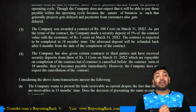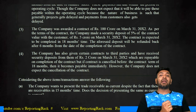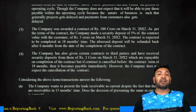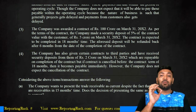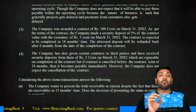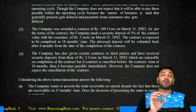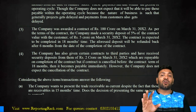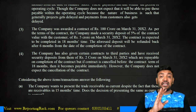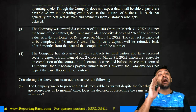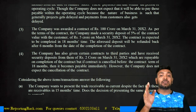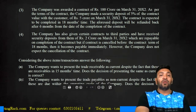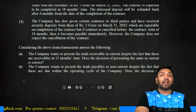The company has certain contracts to third parties and has received a security deposit of 2 crores, repayable on completion of the contract. But if the contract is cancelled before the contract term of eight months, it becomes payable immediately. However, the company does not expect cancellation, and the contract term is 18 months — after completion of 18 months this amount is refundable. Therefore it is a non-current liability.